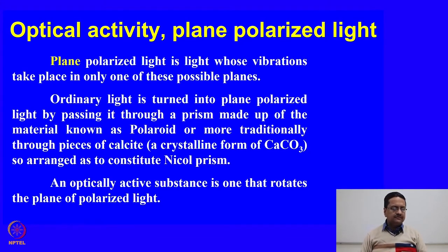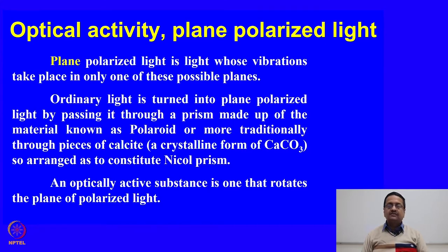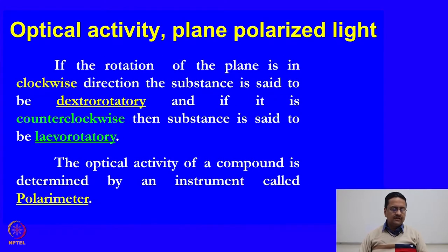A plane polarized light is a light whose vibrations take place in only one possible direction or one possible plane. Ordinary light is turned into plane polarized light by passing it through a prism made up of a material known as polarite, or more traditionally through a piece of calcite, a crystalline form of calcium carbonate, arranged to constitute a Nicol prism. An optically active substance is one that rotates the plane of a plane polarized light. If the rotation is in the clockwise direction then the substance is said to be dextrorotatory.